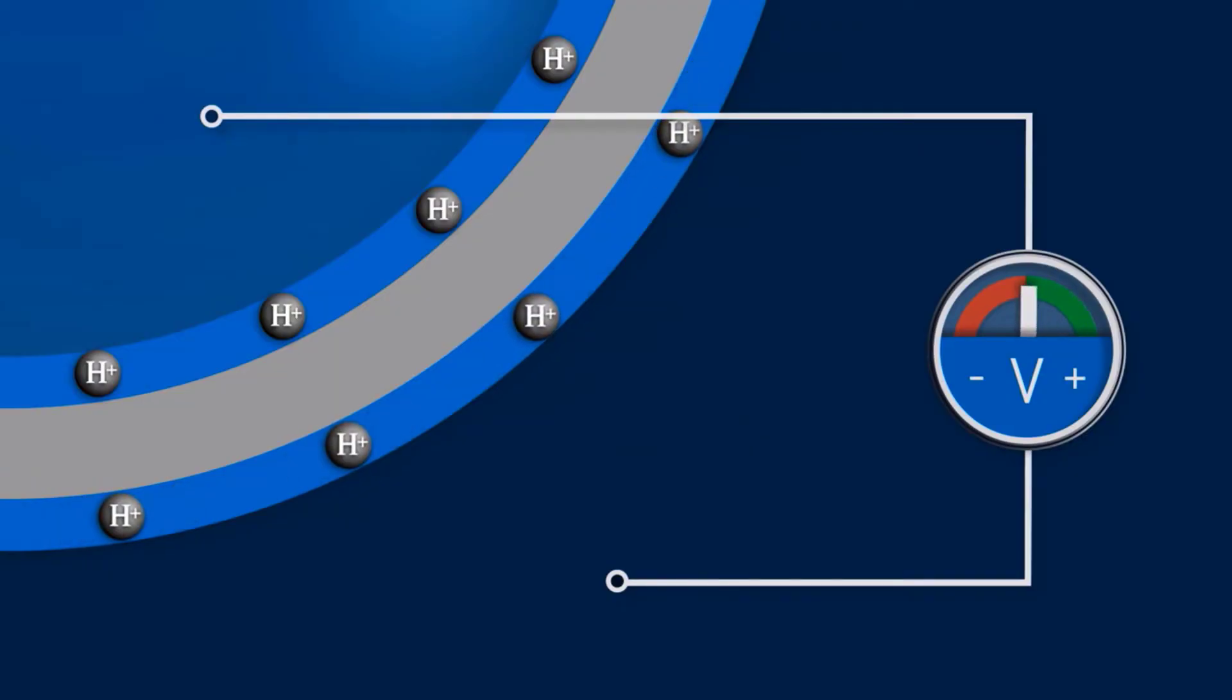If the hydrogen ion concentration is identical on both sides, no potential difference forms and the measured solution is neutral with a pH value of 7. The measured solution is basic if the hydrogen ion concentration inside the glass bulb is higher than in the measured solution.